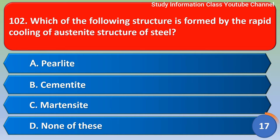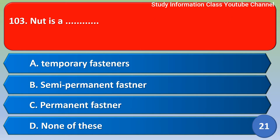Next question: which of the following structures is formed by the rapid cooling of austenite structure of steel? Four options are given. The correct answer is option C, martensite. So option C, martensite, is the correct answer.